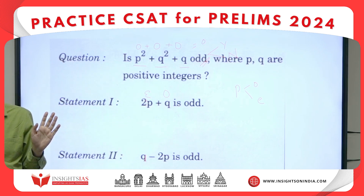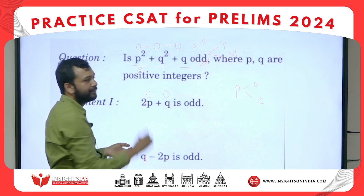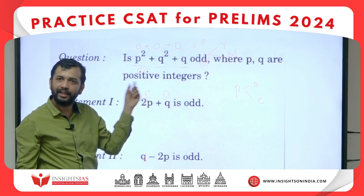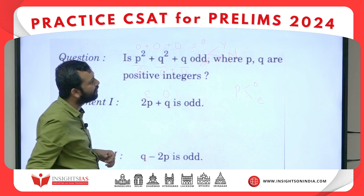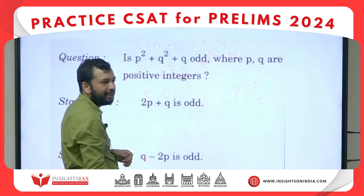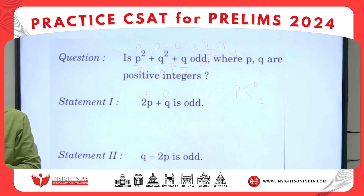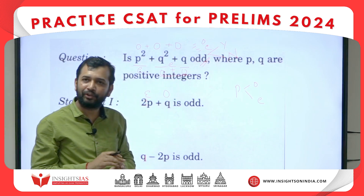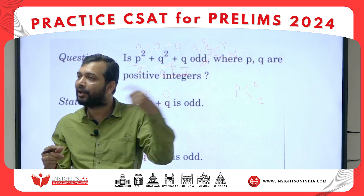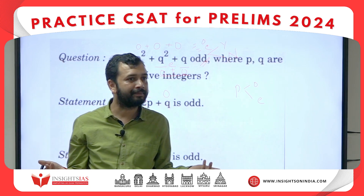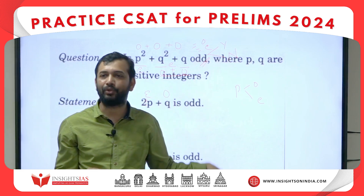When p is even, I am getting even; when p is odd, I am getting odd. So I am getting two different answers depending on p. Since you cannot determine a single answer from statement 1 alone, statement 1 is not sufficient. Now forget statement 1 and go to statement 2 separately.